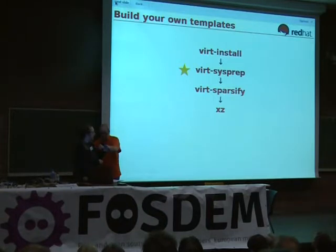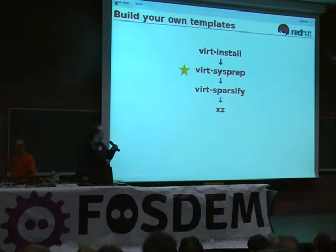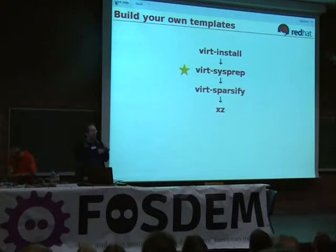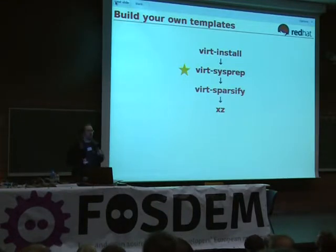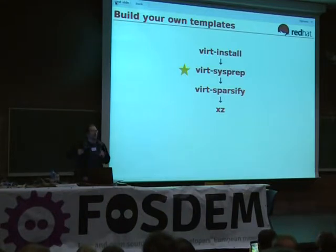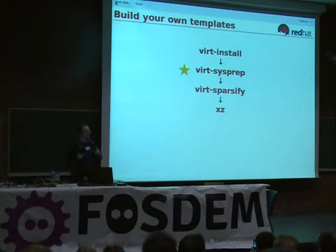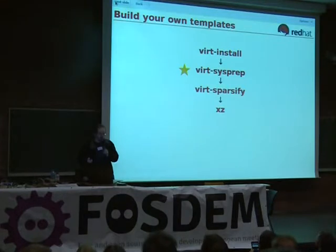VirtSysPrep un-configures the guest. Using LibGuestfs it goes in and can remove things like SSH keys, which you don't want when you clone a guest — you don't want them all to have the same SSH key. It can remove log files, which is important when you don't want to give away how your guest was created. It can get rid of persistent network configuration, and there are about 20 different operations that VirtSysPrep can do.